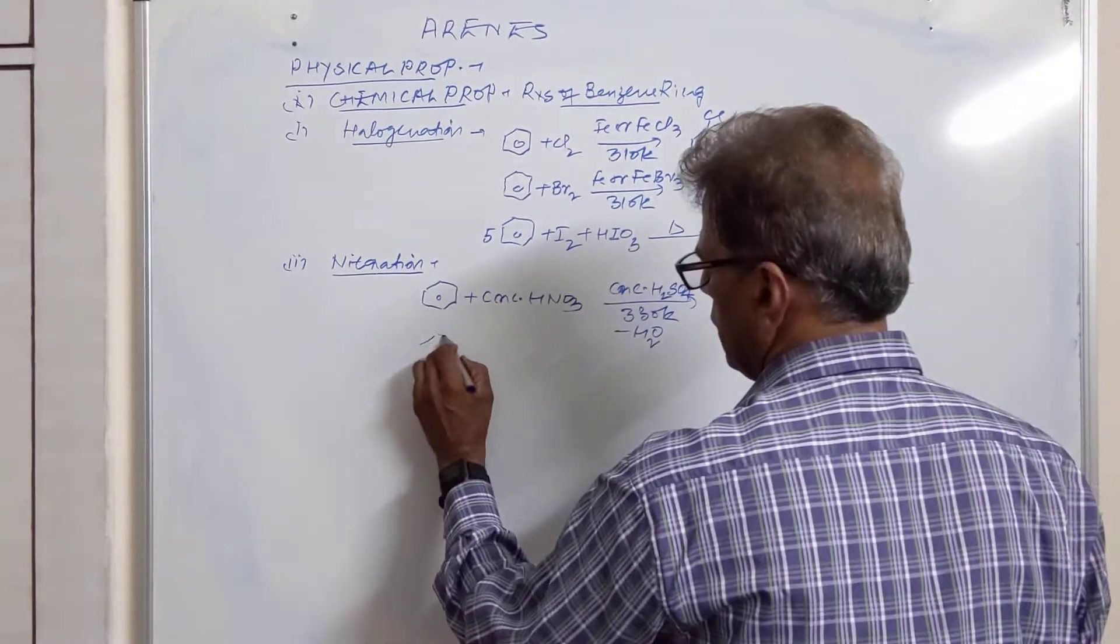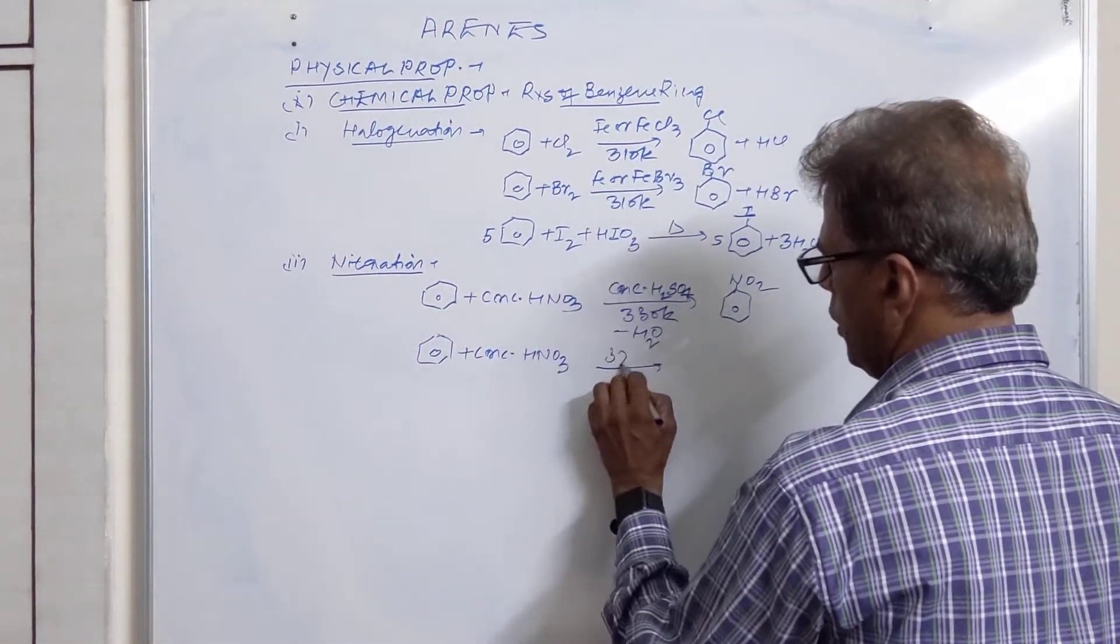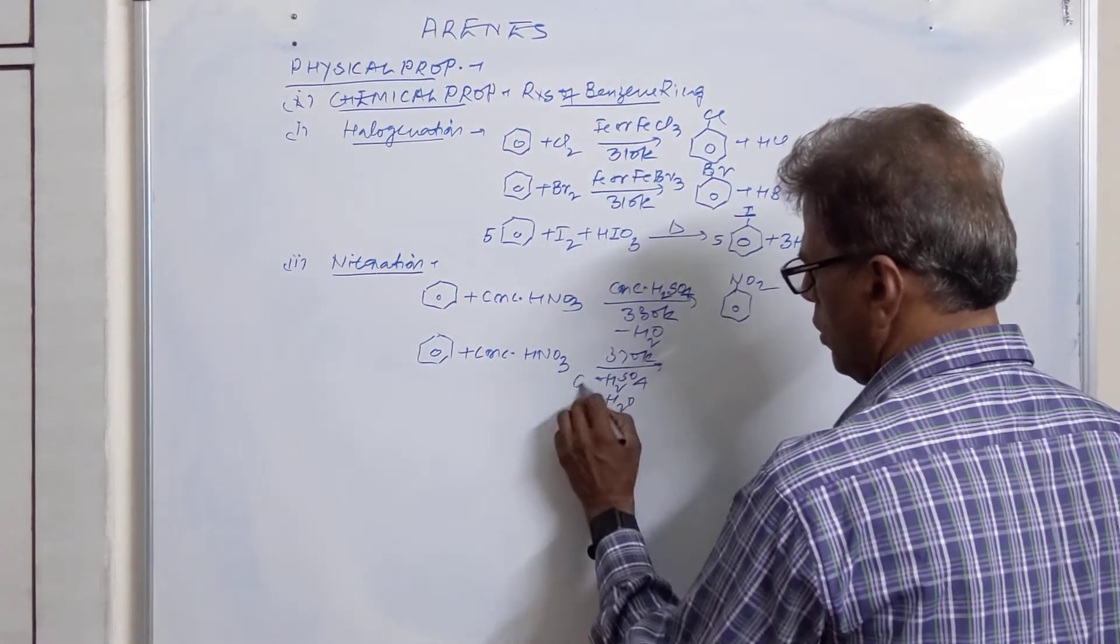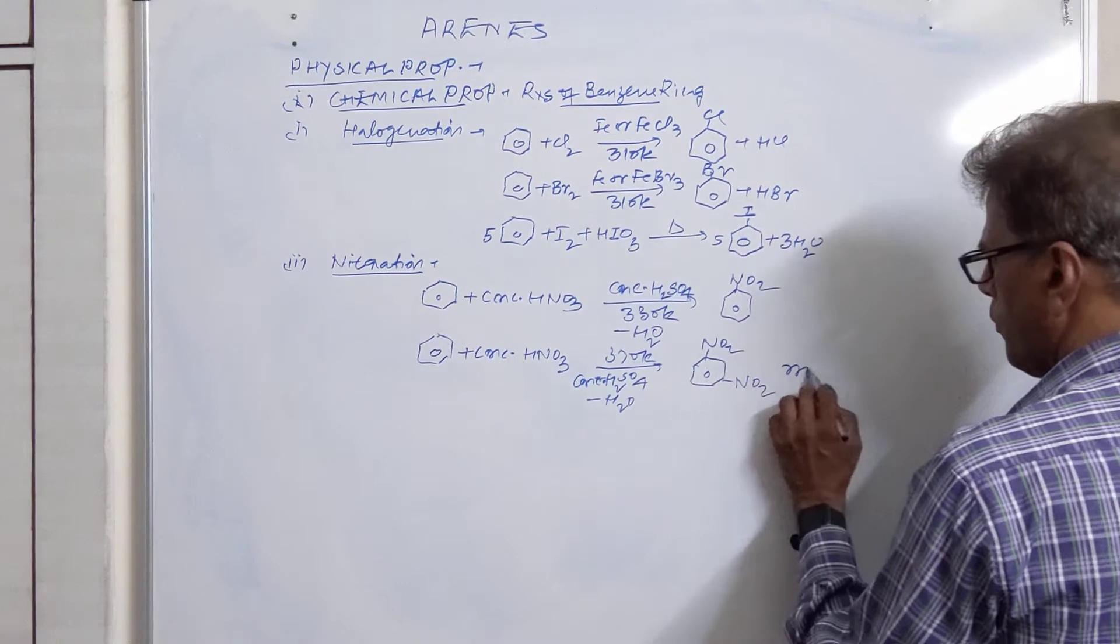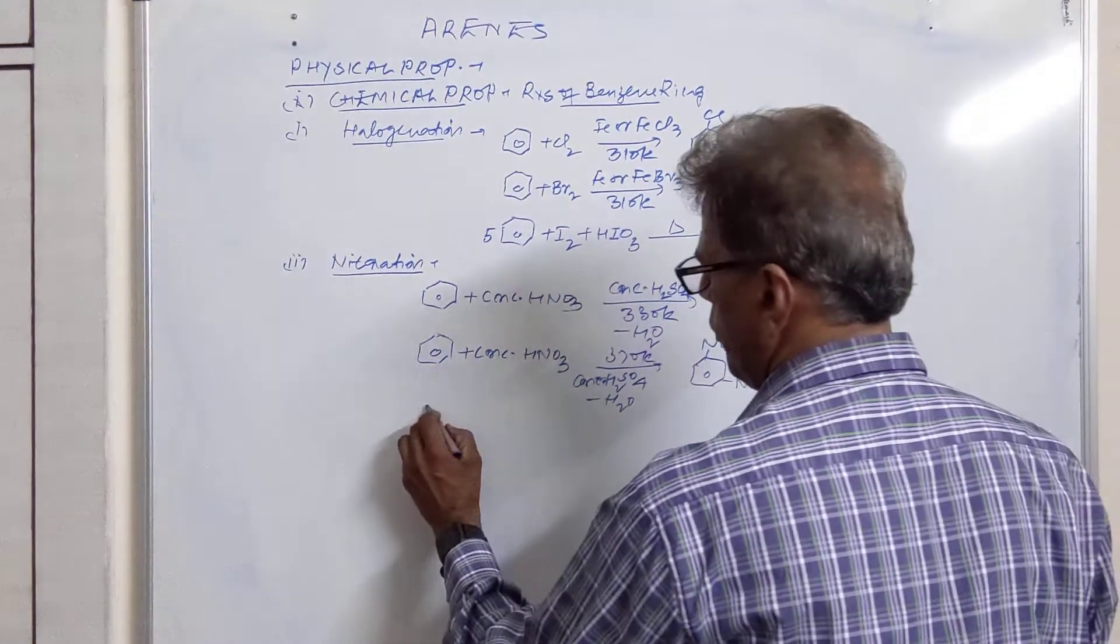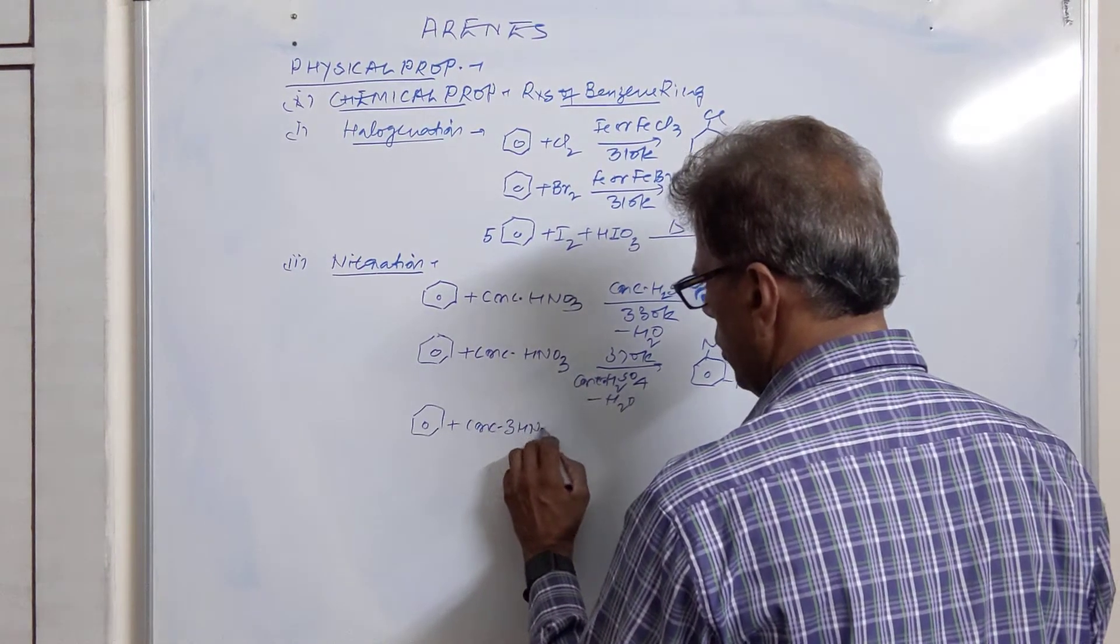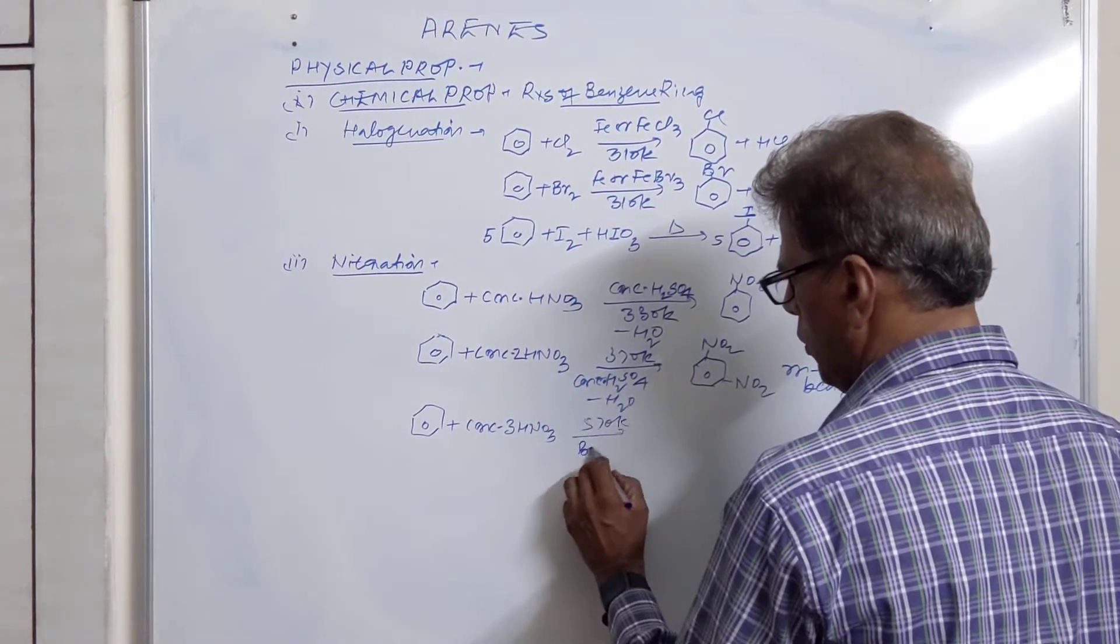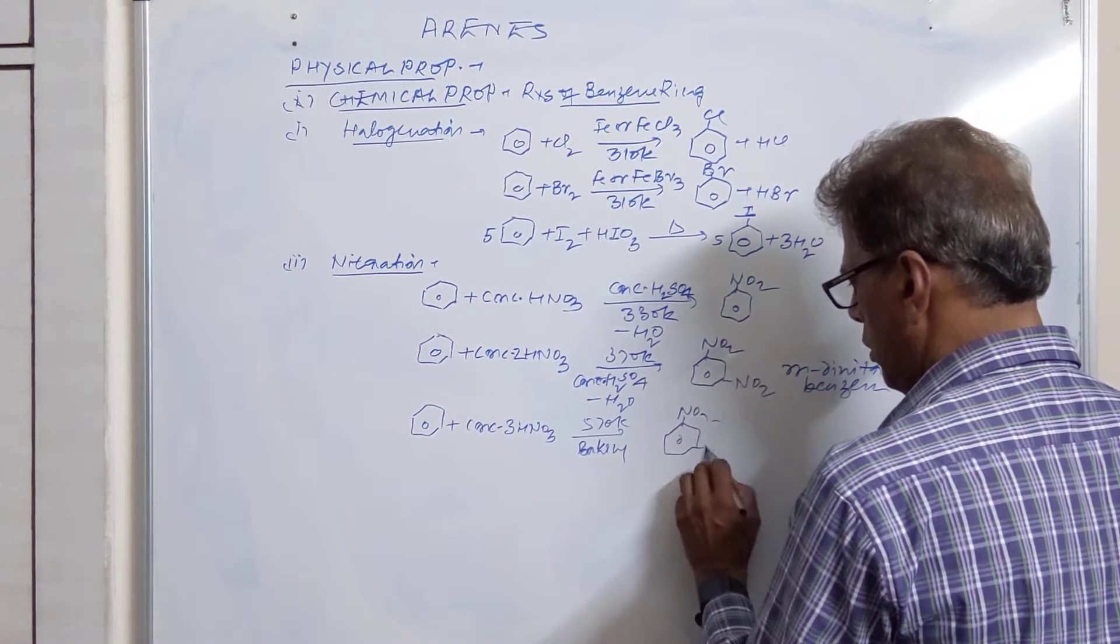If the same reaction is carried out at high temperature, 370 Kelvin with H₂SO₄, loss of water, then we get product meta-dinitrobenzene. If we treat it for longer time, 5 days, with 3 molecules of HNO₃, they react at 570 Kelvin. This is called baking. You get symmetrical trinitrobenzene.